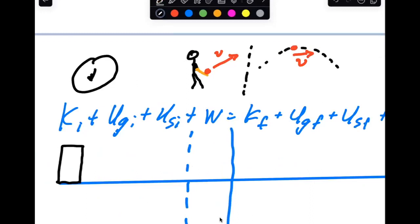Because it's hit at an angle, it doesn't just go straight up, stop and come down. So it does still have kinetic energy at the top, but it also has a lot of gravitational potential energy.